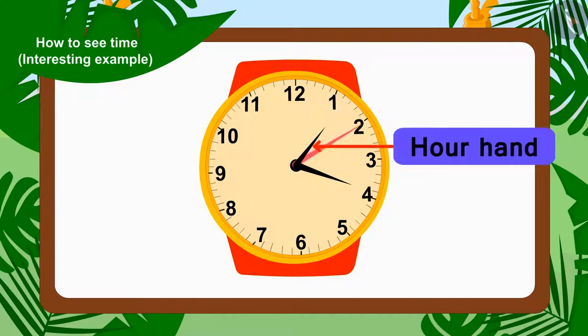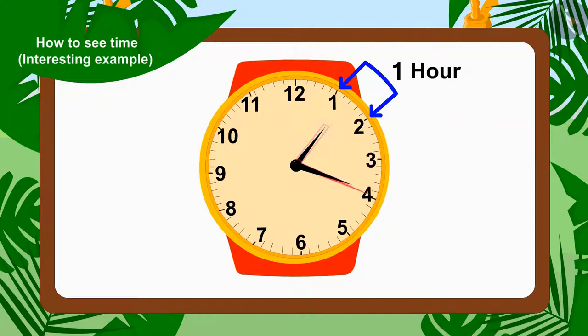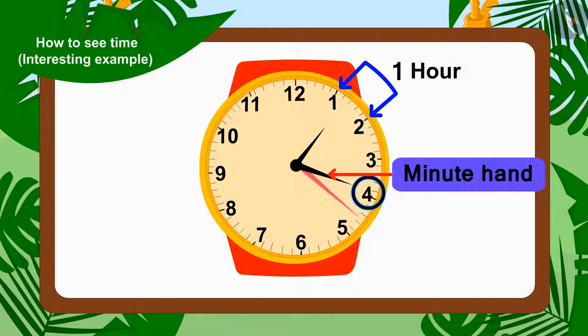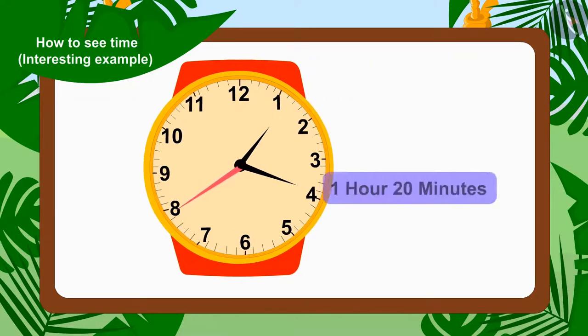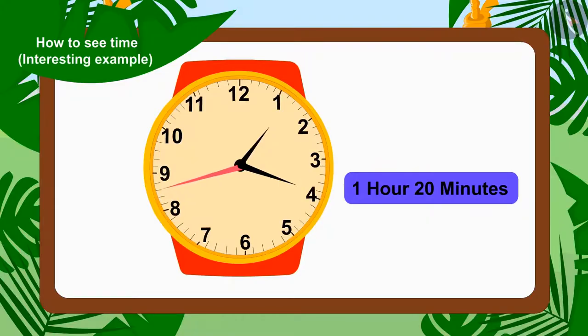In Chanda's watch, the hour needle is between 1 and 2, so it's 1 hour. And the minute needle is on number 4. So, how many minutes does that make? Yes, 4 times 5 or 20 minutes. In this way, the time in Chanda's watch is 1 hour 20 minutes.